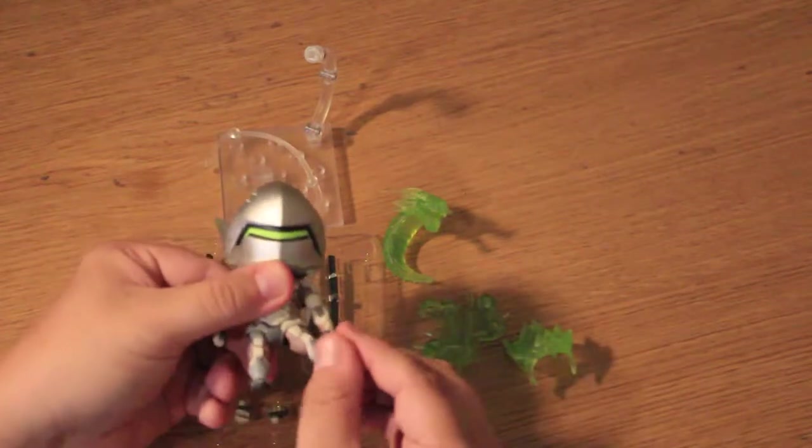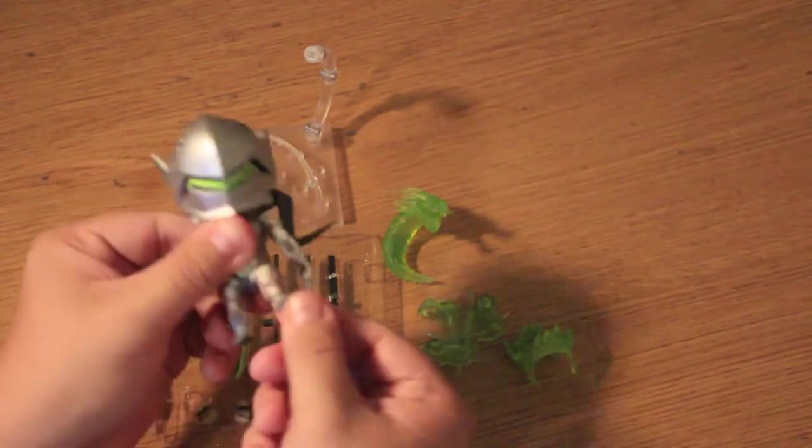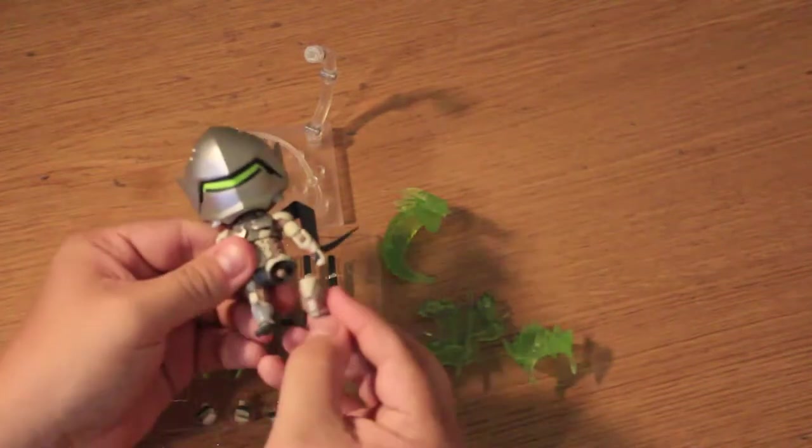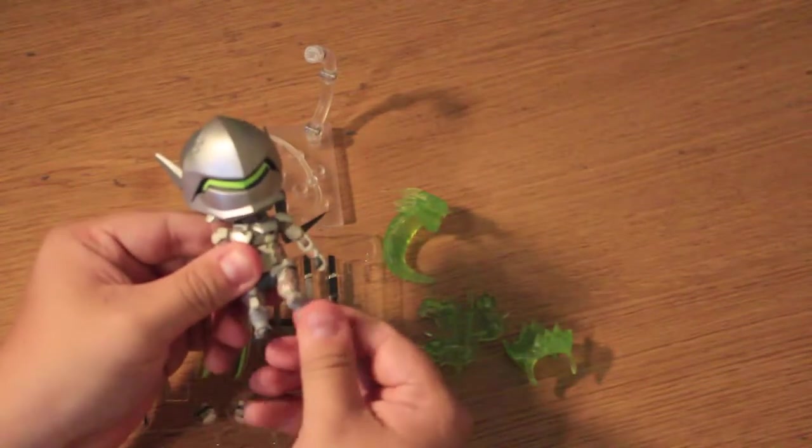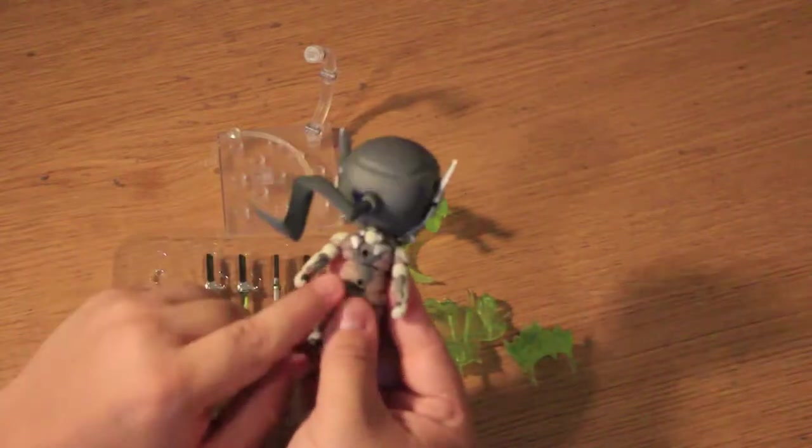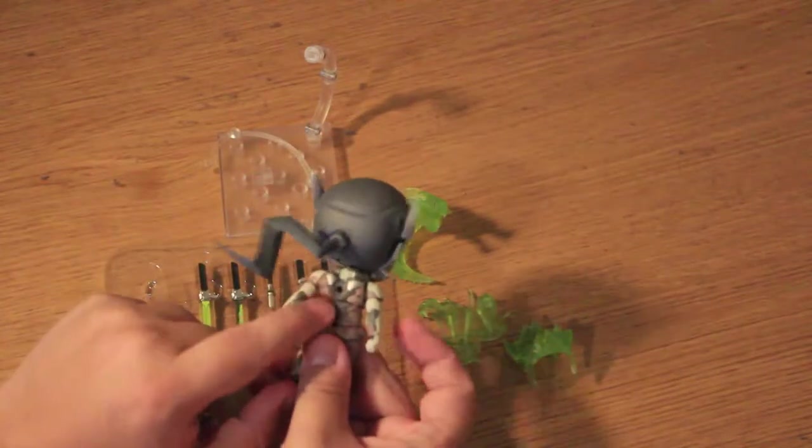The hands on the other hand are just a pair of straight pegs making them easy to swap but with a bad tendency to fall out when you pose him. He also comes with a stand for posing as Nendoroids tend to be top heavy with small feet.